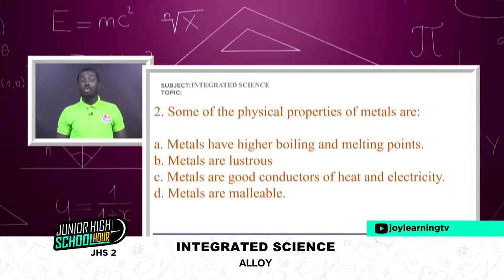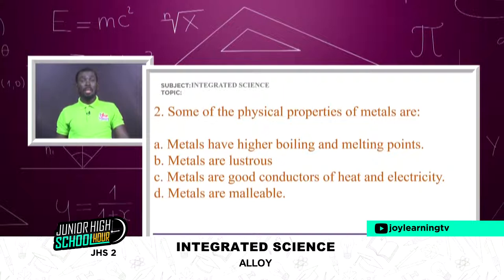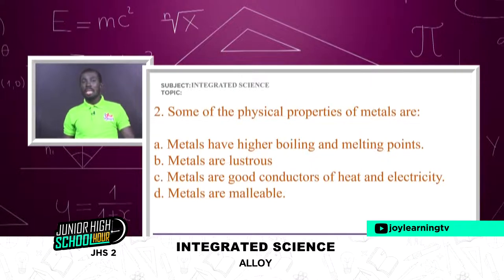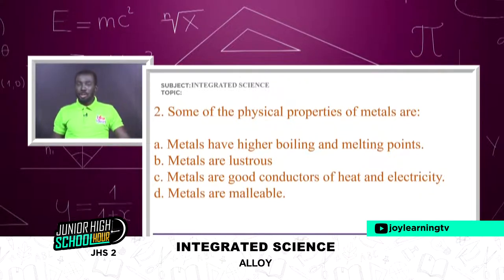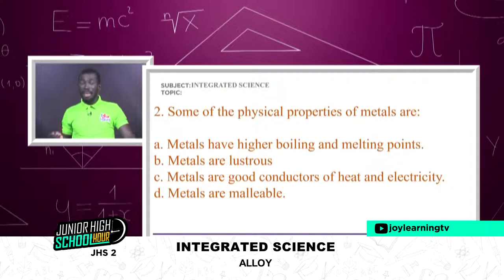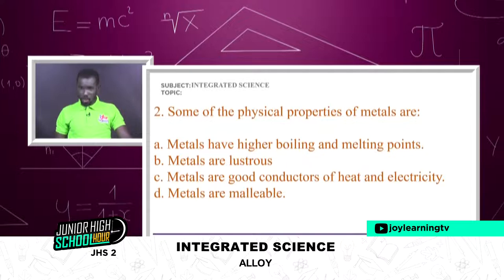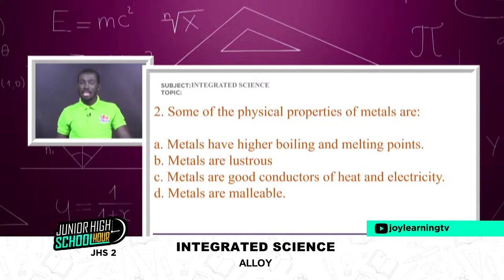Another physical property is that metals are lustrous, meaning they have shiny surfaces. For example, when you see a new aluminium roofing sheet and the sun is scorching, you can't look directly at it because it reflects the light back into your eyes. So every metal in its newest state is lustrous.